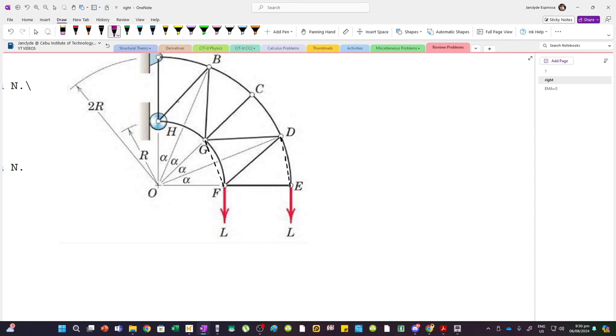This is the approach. When you have curved members, connect the arc. From here up to here, we have this. And then for member DE, we have this connecting line.